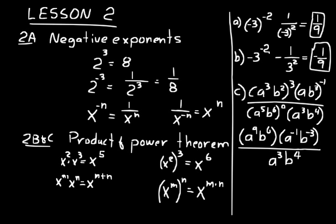Now simplify the numerator, then the denominator. We can only multiply similar variables together and add their exponents — you can't combine a and b. So a to the ninth times a to the negative one gives a to the positive 8. And b to the sixth times b to the negative three gives b to the positive 3. That goes over a to the third, b to the fourth.